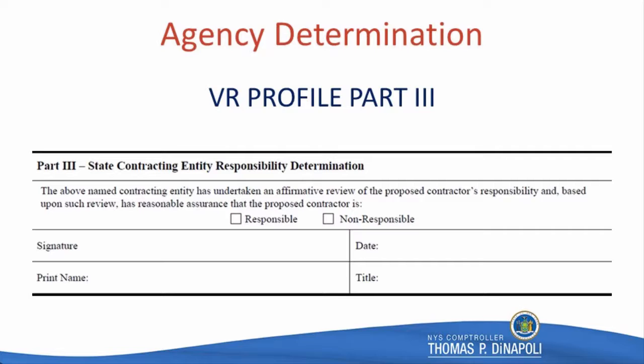When would you check the non-responsible box? When you actually deem a vendor non-responsible after performing your due diligence. Normally, when you find a vendor non-responsible, you award to the next lowest or ranked bidder. You then send both vendors' profiles in the procurement record documents to OSC for review and approval.